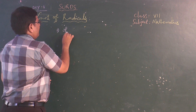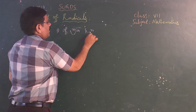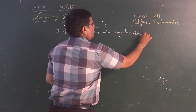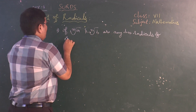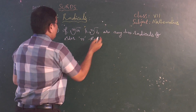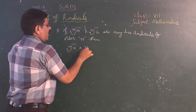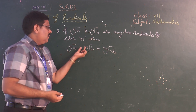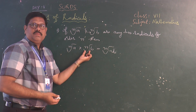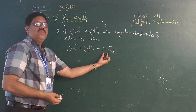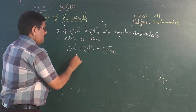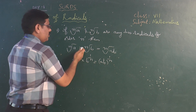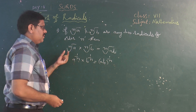The first law is: if n-root a and n-root b are any two radicals of order n, then n-root a multiplied by n-root b can be written as n-root of ab. Whenever you want to multiply two radicals, it can be done only when they are of the same order. In exponential form, we can write the same as a to the power of 1/n times b to the power of 1/n equals ab to the power of 1/n. One is radical form, the other is exponential form.